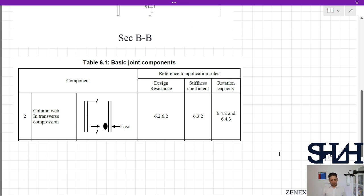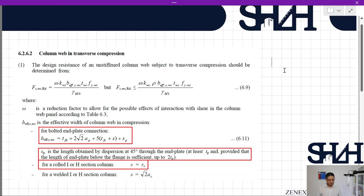The column web in transverse compression is given with two equations. Fc,wc,rd is determined according to ω × kwc × beff,c,wc × twc × fy / γM0, which should be less than the same equation but considering the value of ρ, which is the effect of buckling.